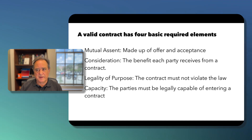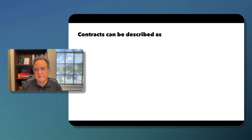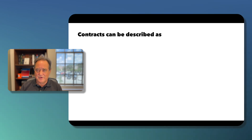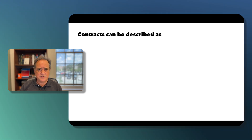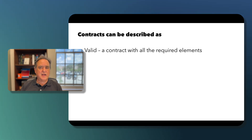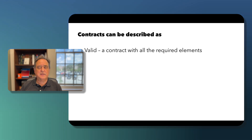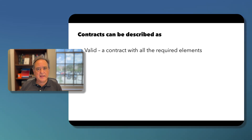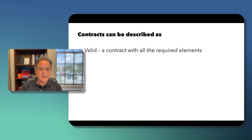Now contracts can be described in several different ways, and these terms sound similar, so make sure you understand how they differ for your test. A valid contract has all required elements: offer, acceptance, consideration, legality, and capacity. A valid contract is enforceable — we can go to court and have the state enforce that agreement.